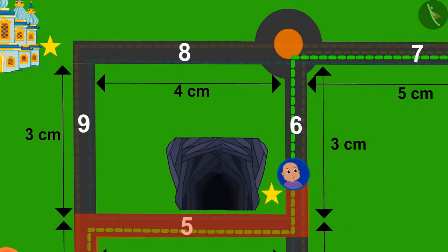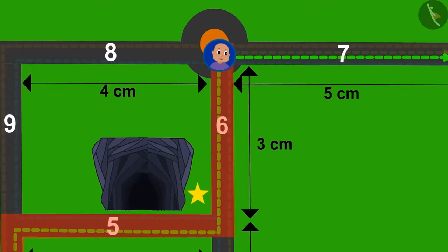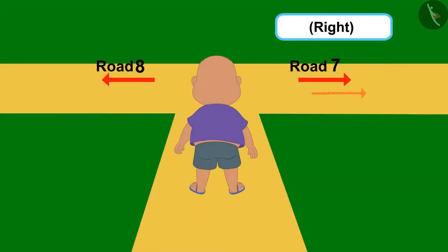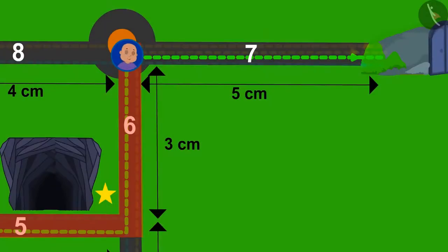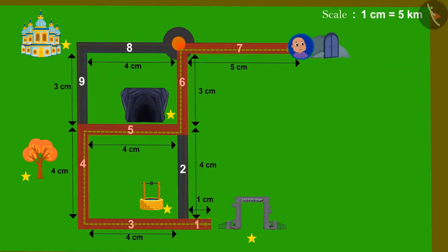Bablu ran fast and crossed road number 6. Now, which road will he take after turning right? Road number 7. Bablu crossed road number 7 from the spot and reached the exit gate.